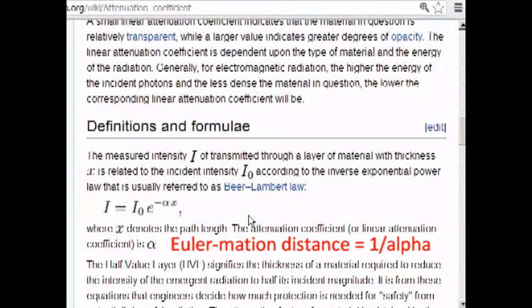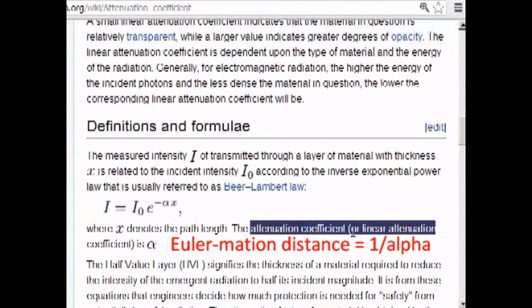I see here under the attenuation coefficient thing in Wikipedia, it says that the Beer-Lambert law says the intensity is equal to the initial intensity times e to the negative alpha x. And I do believe, they give this x denoting the path length, and the attenuation coefficient, or linear attenuation coefficient, is alpha.